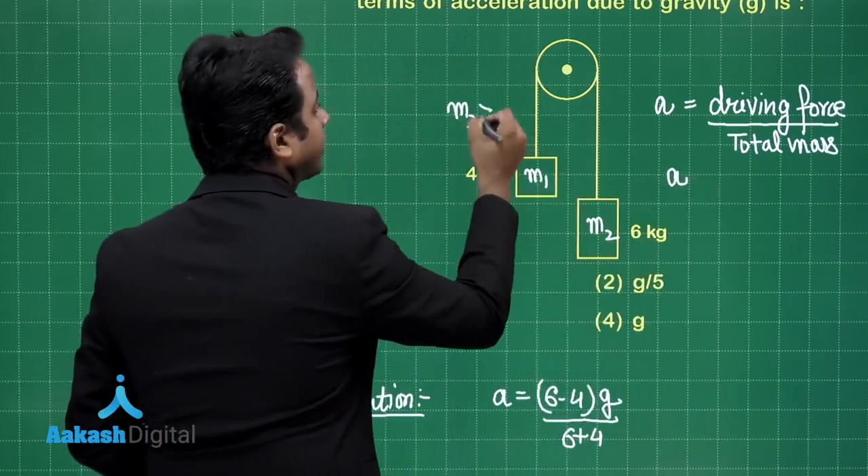If this is m₂ and this is m₁, and clearly m₂ is greater than m₁, so acceleration will be (m₂ - m₁)g / (m₁ + m₂). This is the direct result I'm utilizing here. This will be 2g/10, so simply this will be g/5. That's how you express the acceleration of the system in terms of acceleration due to gravity. Out of the given options, option number 2 is the right choice for this question.